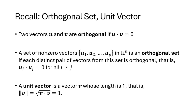First, let's recall some definitions from the previous two lectures. Two vectors u and v are orthogonal if u dot v equals 0. A set of non-zero vectors u1 through up in Rn is an orthogonal set if each distinct pair of vectors is orthogonal — that is, ui dot uj equals 0 whenever i and j are different subscripts. A unit vector is a vector whose length is 1, meaning the square root of v dot v equals 1, which simplifies to v dot v equals 1.